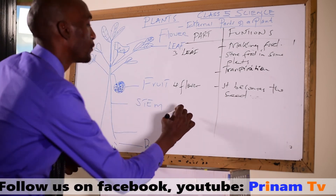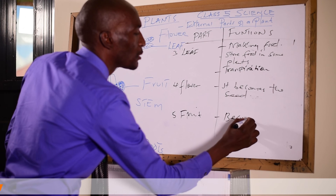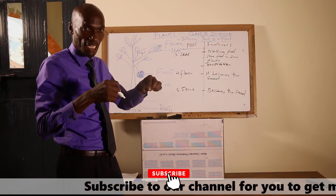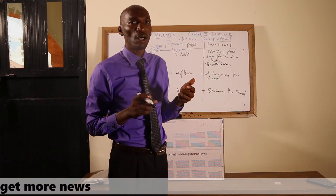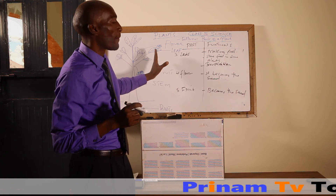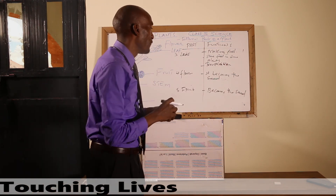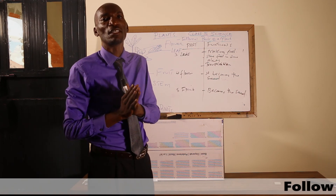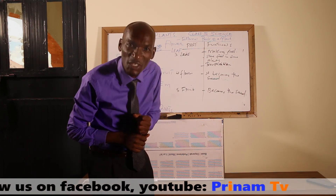Number five, we have the fruit. The fruit becomes the seed — the seed is what is inside the fruit. For example, with a mango, you eat the juice on the outside, but the seed inside is what is planted to become a new plant. So the fruit is an external part of the plant which becomes the seed — very important. I hope you have understood the functions of the external parts of the plant. Please revise and check your notes. Thank you, we'll meet next time.